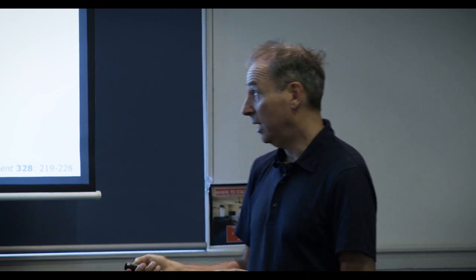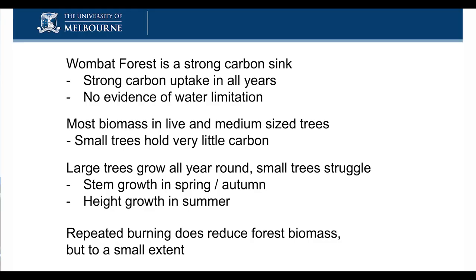So prescribed burning — even burning a forest every three years, which would be the extreme — does reduce standing carbon biomass, but only by about 15%. To summarize this part: the Wombat Forest is a strong carbon sink, always taking up carbon for most of the year. There's no evidence of water limitation at the site where we work. Most biomass is in medium-to-large trees; small trees are not significant carbon stores. Large trees grow all year round with stem growth in autumn-spring and height growth mainly in summer. Repeated burning reduces forest biomass, but not to a large extent.